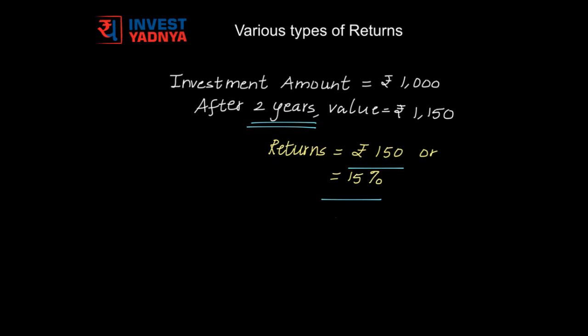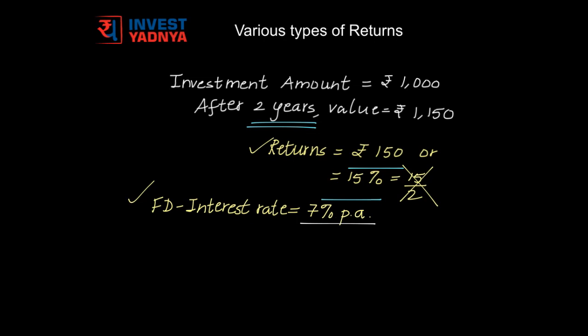Now you have done such a mutual fund investment for the first time, and you want to compare its returns with that of an FD which your friend says is a better investment. But FD is offering an interest rate of around 7% per annum. So how do you compare returns of Rs.150 or 15% earned over two years with returns of 7% per annum? You would also earn returns in the second year — that is, the returns would compound. So the need is to bring both investments at par and then compare them. And so there is a need to annualize the returns.